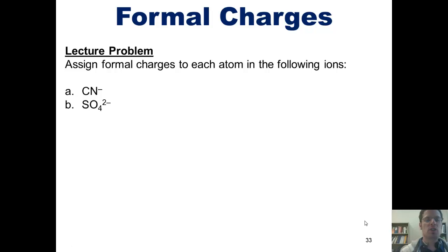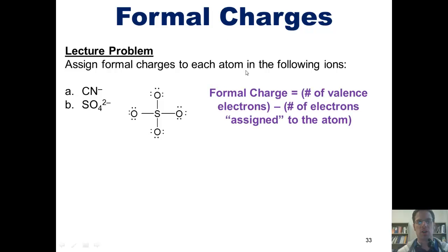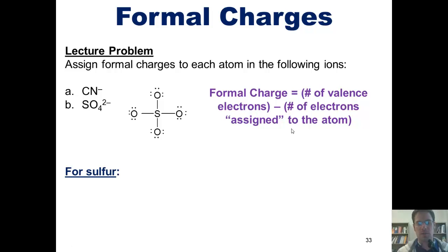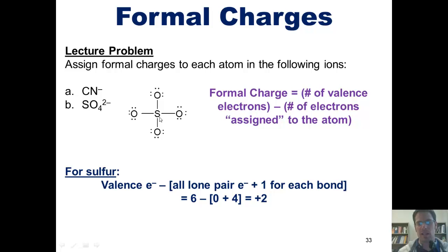Here's our second example: SO₄²⁻, which is the sulfate anion. One Lewis structure you can draw for sulfate looks like this. To calculate the formal charge on each atom, we use our formula: formal charge equals the number of valence electrons minus the number of electrons assigned to the atom. For sulfur, that is the number of valence electrons in sulfur minus the sum of lone pair electrons plus one for each bond. Sulfur has six valence electrons. This particular sulfur has no lone pair electrons, giving zero, and is experiencing four single bonds, giving four. Thus the total formal charge for sulfur is 6 minus (0 + 4), which equals plus two.